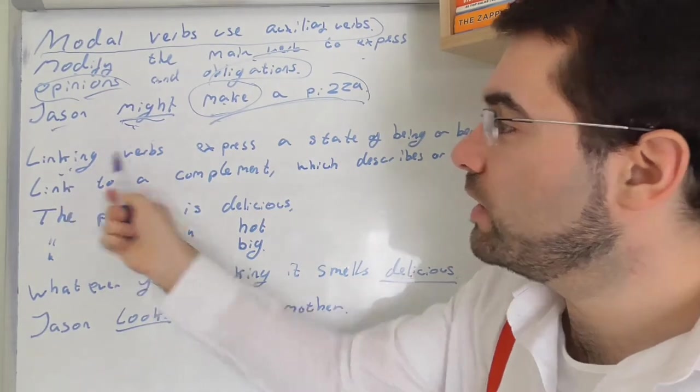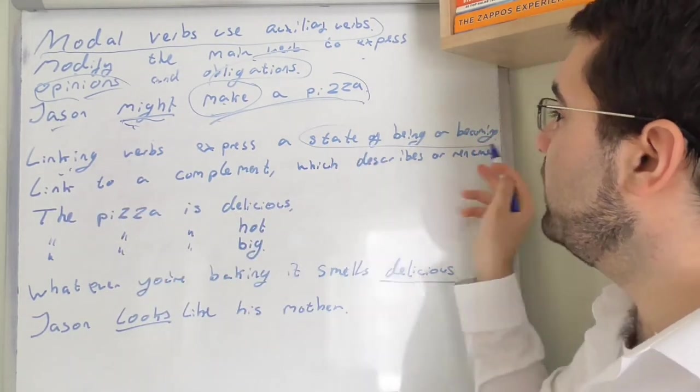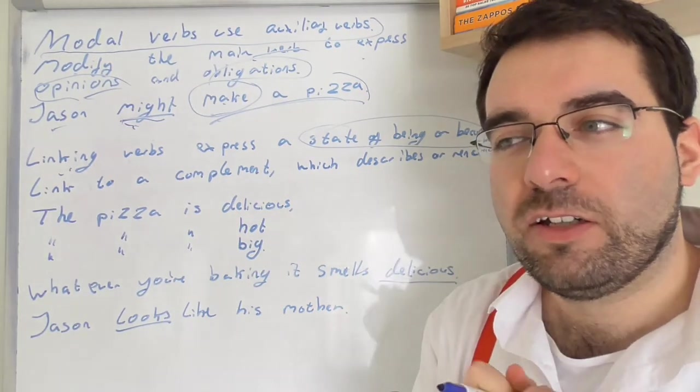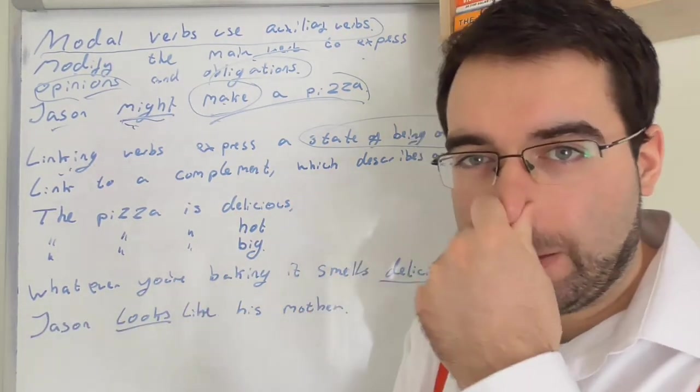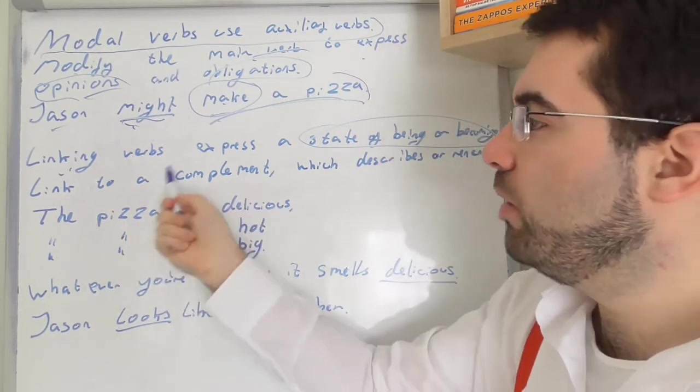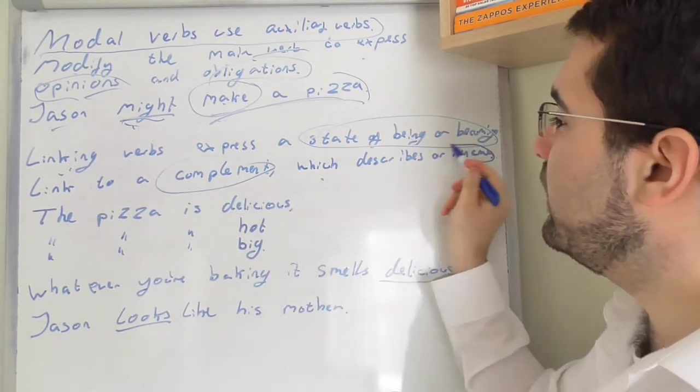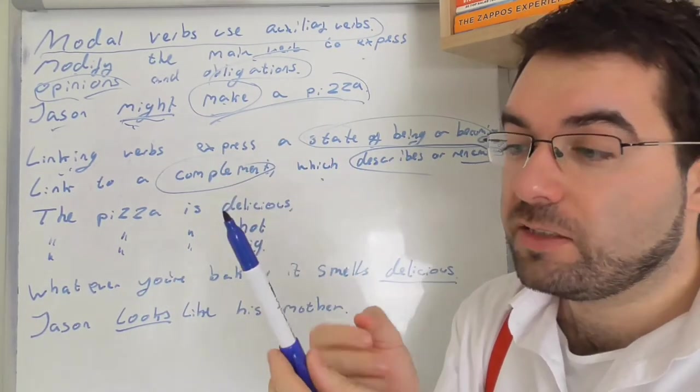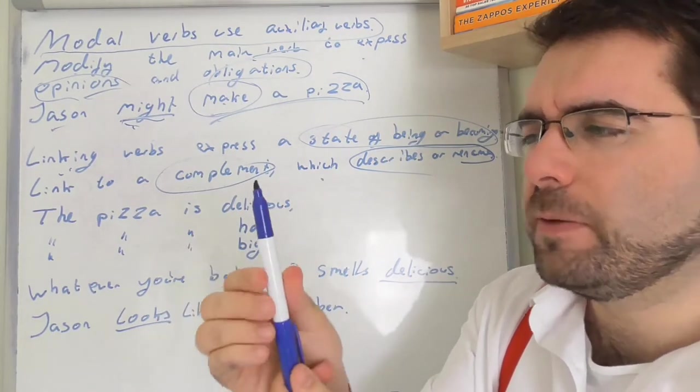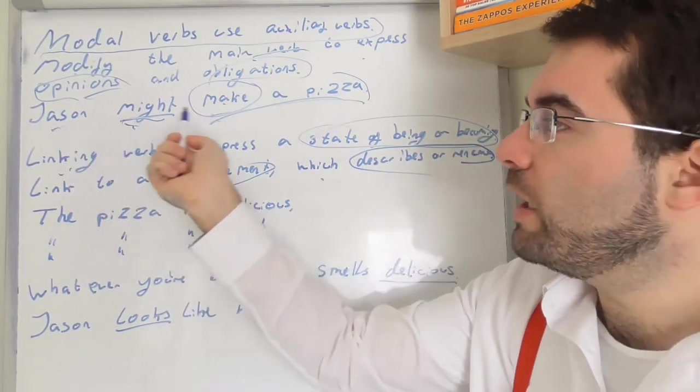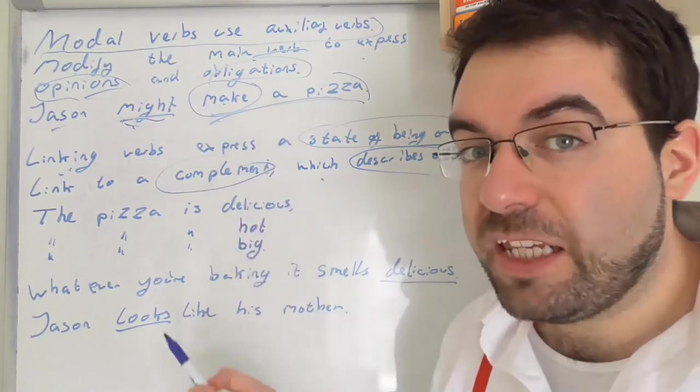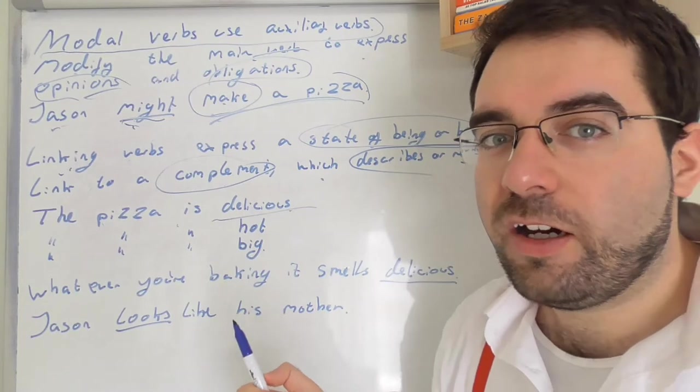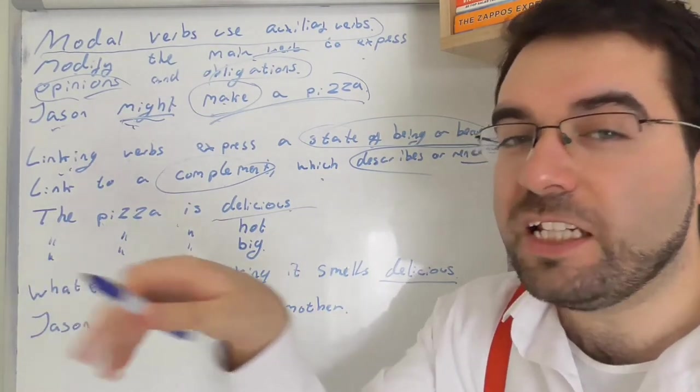But linking verbs are interesting. Linking verbs express a state of being or becoming. State of being or becoming something. You can link them to a complement which describes or renames. It's interesting, it describes something or renames it, rebrands it, repurposes it. So Jason might make a pizza. Jason then made a pizza. But then look, the pizza is delicious. It's a state of being. Delicious, it is delicious.